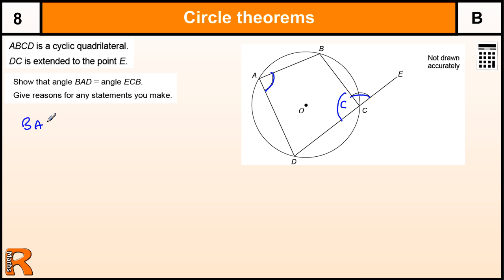So angle BAD plus angle C is equal to 180 degrees because opposite angles in a cyclic quad add to 180.